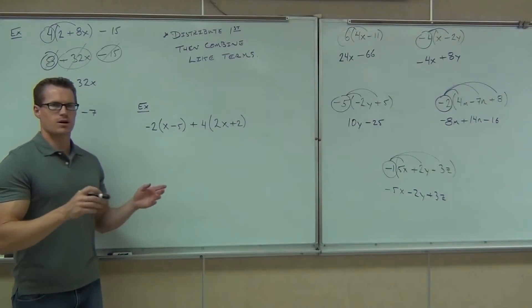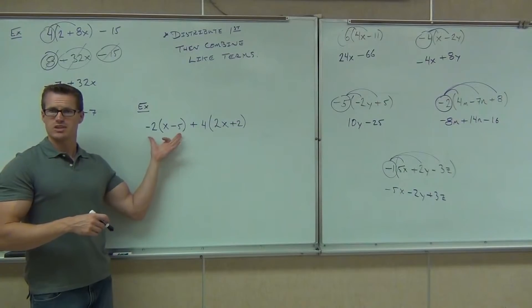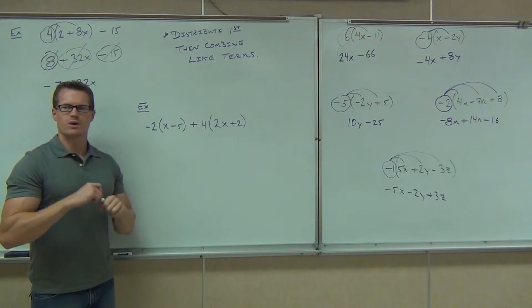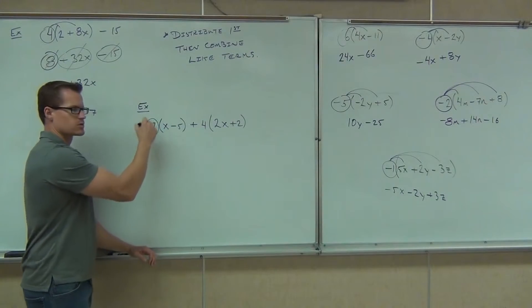When we look at this problem, the first thing I'm doing, honestly, I'm ignoring this part. I'm looking just at this piece, which means distribution. We've seen things like this before. What number are we distributing, ladies and gentlemen? Negative 2x. So I'm going to circle that negative 2. That's what's getting distributed.